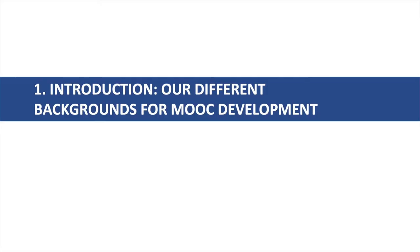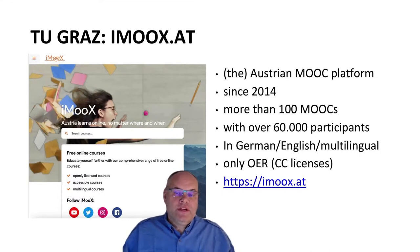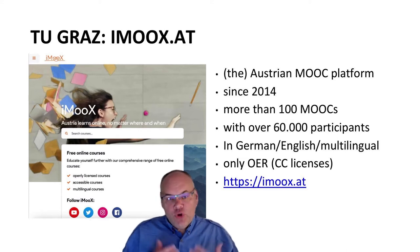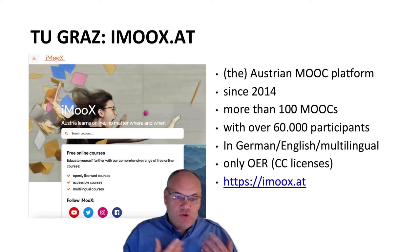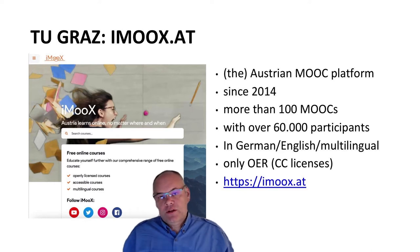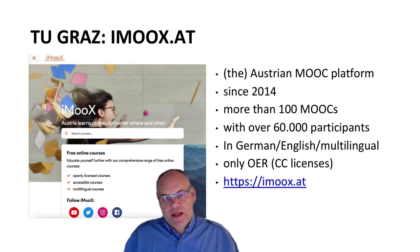Let's start by explaining our respective backgrounds regarding MOOC development. iMoox.at is the Austrian MOOC platform founded in 2014. All MOOCs on this platform are explicitly open licensed and are taught by at least one university lecturer. Currently, the platform offers about 100 different MOOCs on various topics, mostly in German language, with more than 70 partners using this platform.